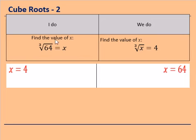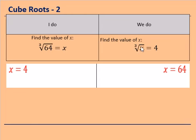From the I Do we saw that the cube root of 64 equals 4. The We Do was basically the opposite: what number cubed equals 4? Well, the I Do already told us that x equals 64, since the cube root of 64 equals 4. Well done if you spotted that and got it right.